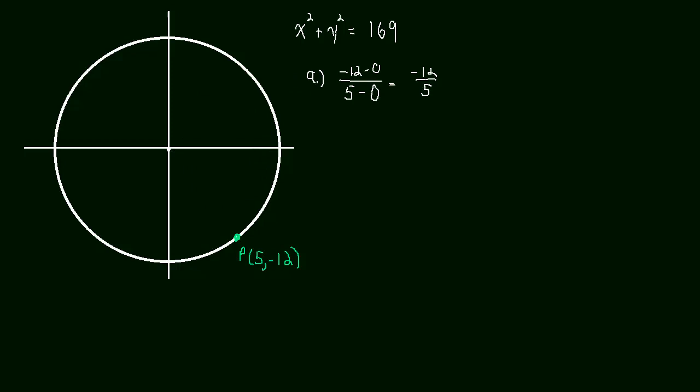Okay, then part B says find the slope of the tangent line at point P. So here's the tangent line and if you're not sure what a tangent line is you can skip ahead to the tangent line videos.